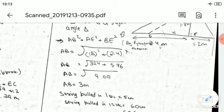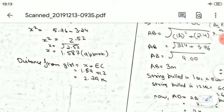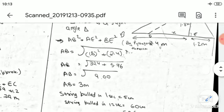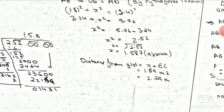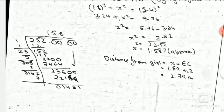1.59 plus 1.2 equals 2.79 meters. So the answer is 2.79 meters. Thank you.